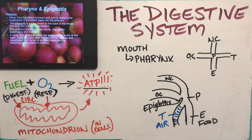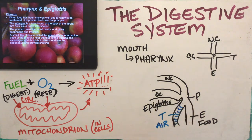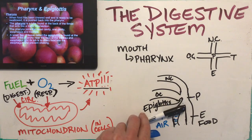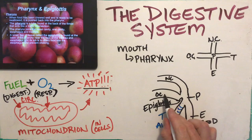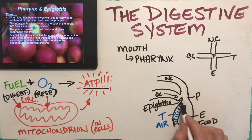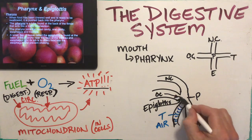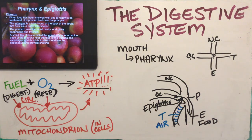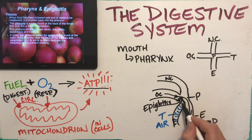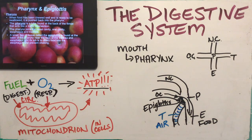The epiglottis has a little hinge and it covers over the trachea — when it's covered, no food gets into the lungs or trachea and you won't choke. The epiglottis is a safety measure that keeps our airway from getting blocked by food. It folds over the top of the trachea, found in the pharynx.